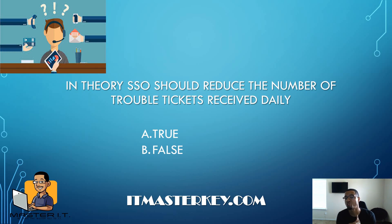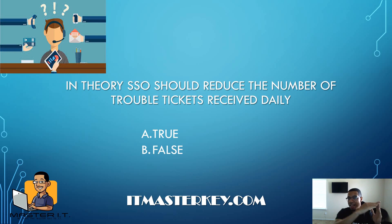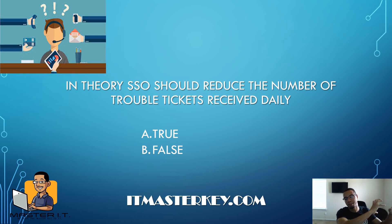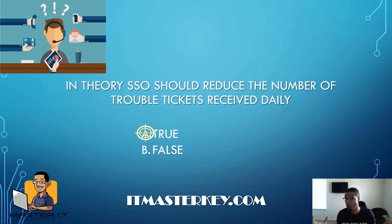In theory, SSO — or single sign-on — should reduce the number of trouble tickets received daily. Is that true or false? Single sign-on means you sign on to one platform and have access to several. Like signing in with Facebook to access multiple other sites — you sign in once but get access to several things. It's true, because in a help desk environment, a huge chunk of tickets are just password resets and account unlocks.